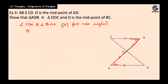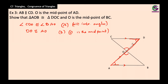Since O is the midpoint of AD, we have DO congruent to AO — that gives us a side. Next, since lines CB and AD intersect, we have vertically opposite angles. So angle DOC is congruent to angle AOB because they are vertical angles — that gives us another angle.